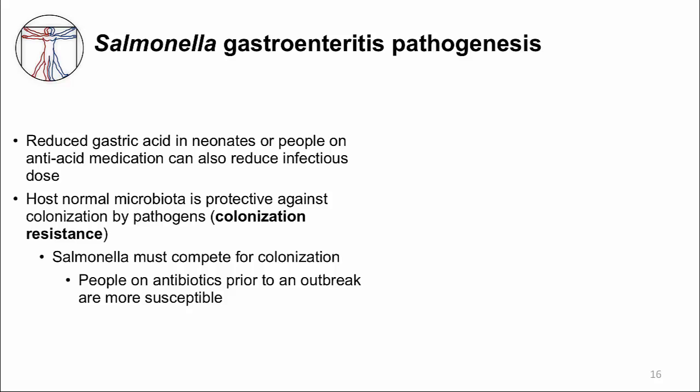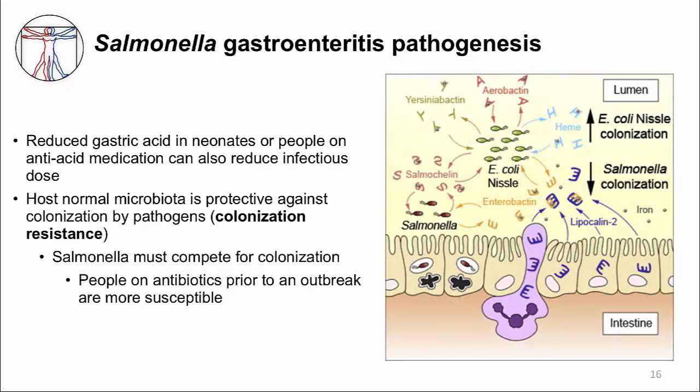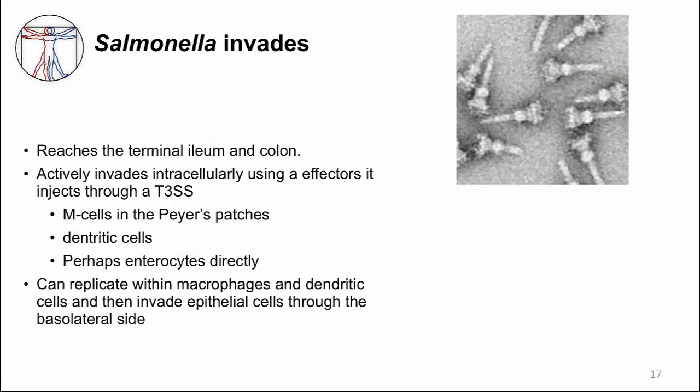Animal experiments and human epidemiology studies demonstrate that normal microbiota is protective against Salmonella infection. Infection risk in Salmonella outbreaks is higher in people who were taking antibiotics a month prior to the outbreak. Competing for micronutrients is one mechanism of colonization resistance — E. coli produces siderophores to steal iron from the host and other bacteria, and Salmonella also competes for this iron. When resident microbiota is disrupted, Salmonella can more easily obtain iron and wins.